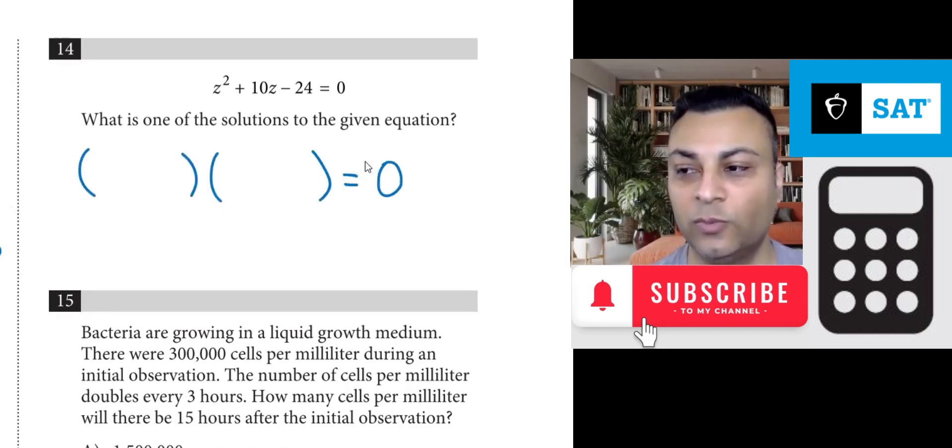Equals zero. We need a z here and a z here. Now, how do you make 24 or negative 24? Let's write down the factors of 24 or the ways to make 24.